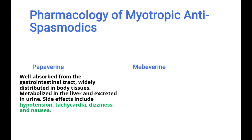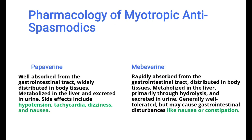Second, mebeverine: it is rapidly absorbed from the gastrointestinal tract and distributed in body tissues. It is metabolized primarily through hydrolysis and excreted in urine. Generally it is well tolerated, but side effects may include gastrointestinal disturbances such as nausea and constipation.